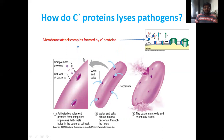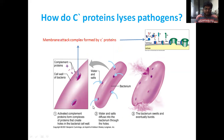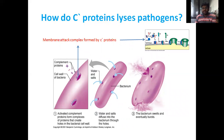The complement proteins lyse pathogens through a membrane attack complex. Activated complement proteins form complexes that create holes in the bacterial cell wall, causing cell contents to leak out. By puncturing the bacterial cell wall, the bacteria are destroyed and cannot survive. The pathogen cannot remain alive when subjected to these C proteins.